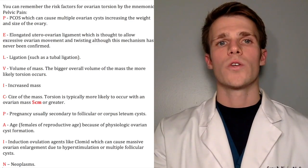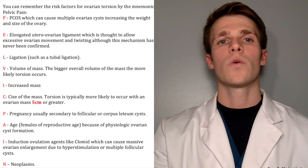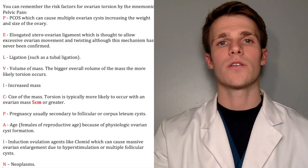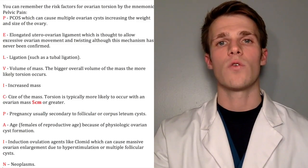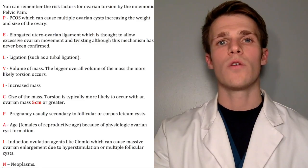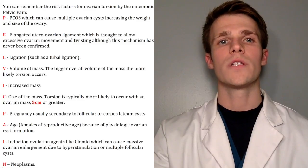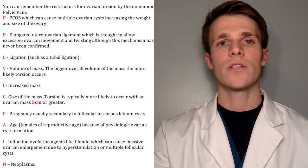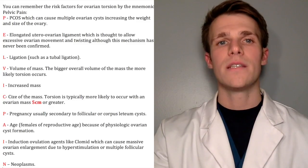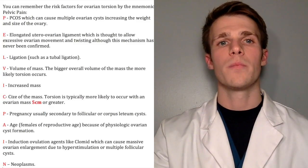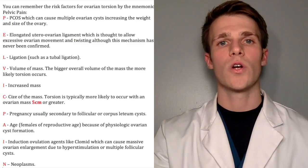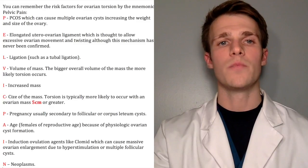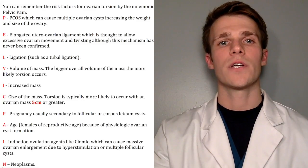You can remember the risk factors for ovarian torsion by the mnemonic 'pelvic pain.' The first P stands for PCOS, or polycystic ovarian syndrome, which can cause multiple cysts within the ovary, increasing the weight and size of the ovary. E stands for elongated utero-ovarian ligament, which is thought to allow excessive ovarian movement and twisting, although this has never been confirmed. L stands for ligation, such as a tubal ligation. V stands for volume of mass — the bigger overall volume of the mass makes torsion more likely to occur. However, really large masses might be less likely to cause torsion because their volume impedes movement. And I stands for increased mass.